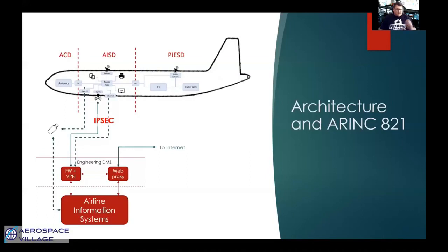EFBs connecting to the AISD will often route traffic to the internet through the IPSEC tunnel, through the DMZ and out to the internet — usually for software updates. It's usually a very restricted set of websites where the EFBs can go. That is usually done on the ground, because during flight you have the latency of the SATCOM connection down to the ground systems through the DMZ and out to the internet, making response time in flight pretty long. On the ground, it's manageable.